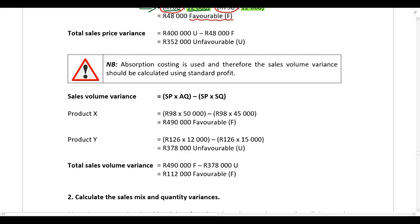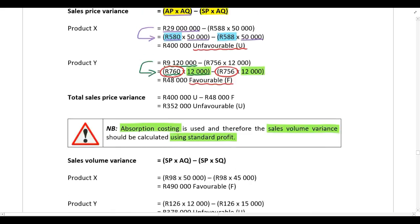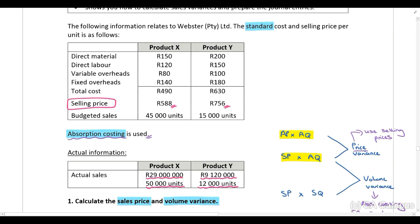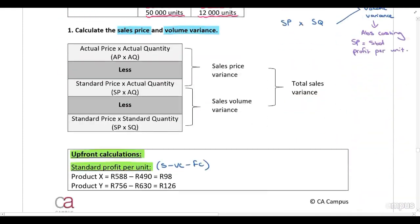For the volume variance, the question was silent, so we assume we are calculating variances to reconcile profits. Absorption costing is used, which means the sales volume variance should be calculated using standard profit. Calculate the standard profit per unit: selling price per unit minus variable cost per unit minus fixed costs per unit. Since you have the standard selling price and total standard costs, deducting total costs from the selling price gives the standard profit per unit.